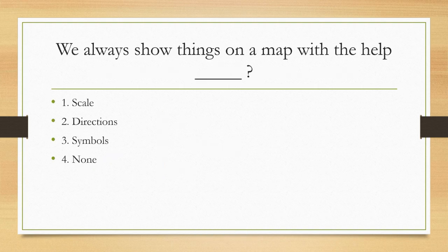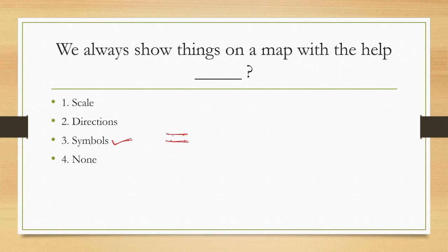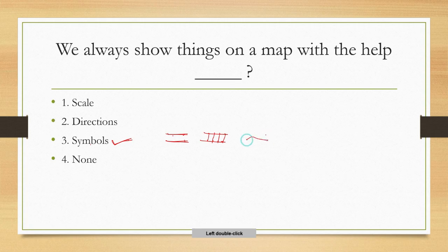Next question: we always show things on a map with the help of what? The answer is symbols. We use symbols on maps. For example, a road is shown with a particular symbol, a railway track has its own symbol, and a graveyard also has a symbol. These symbols are shown on the map.